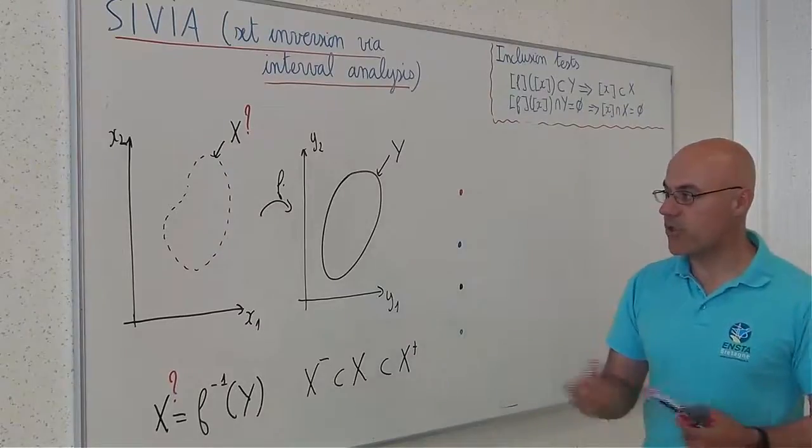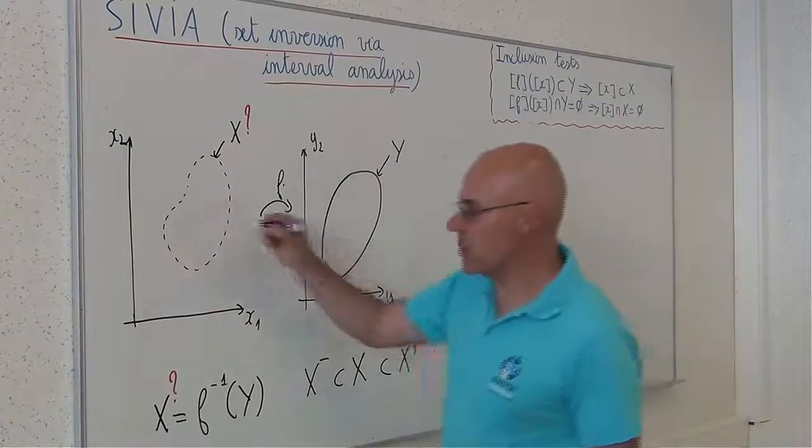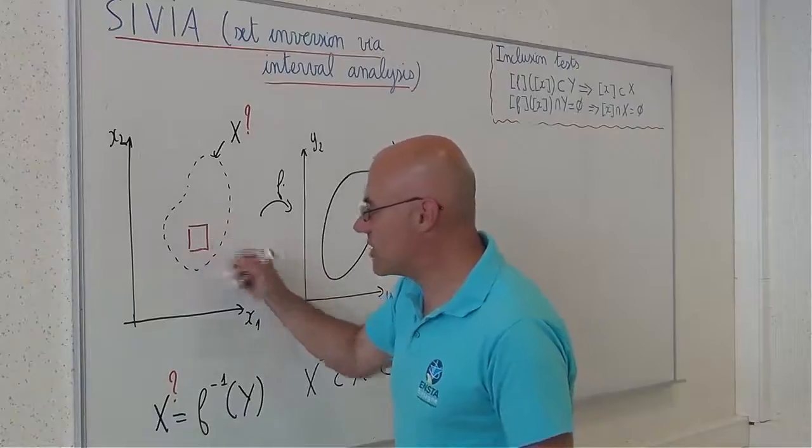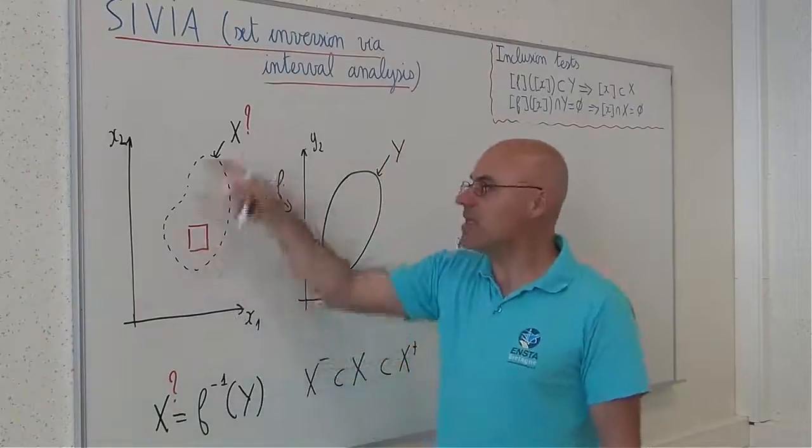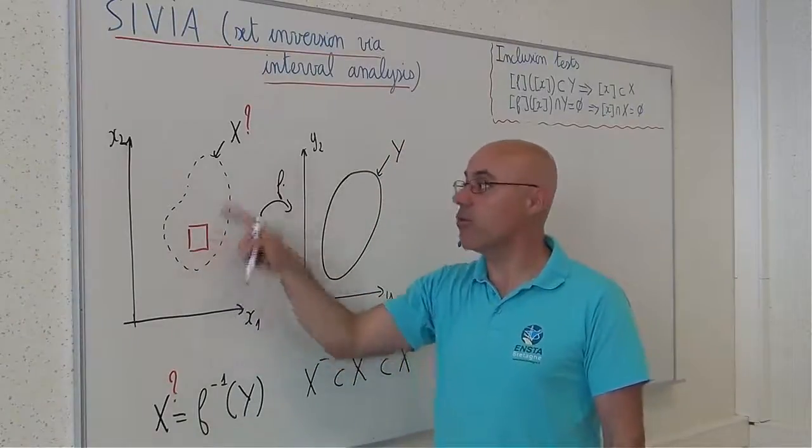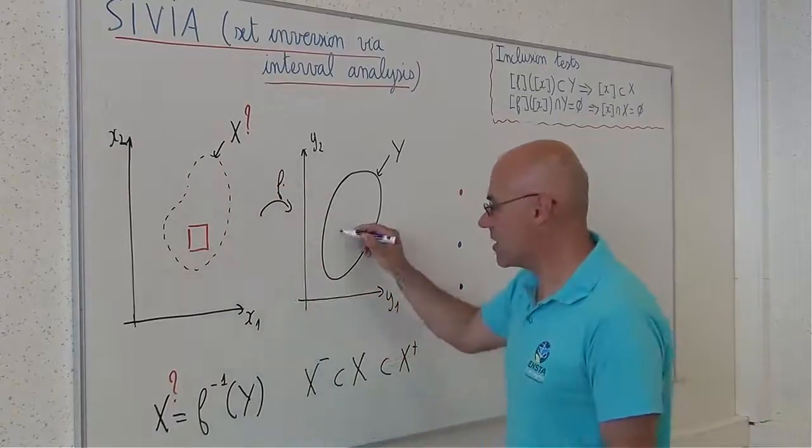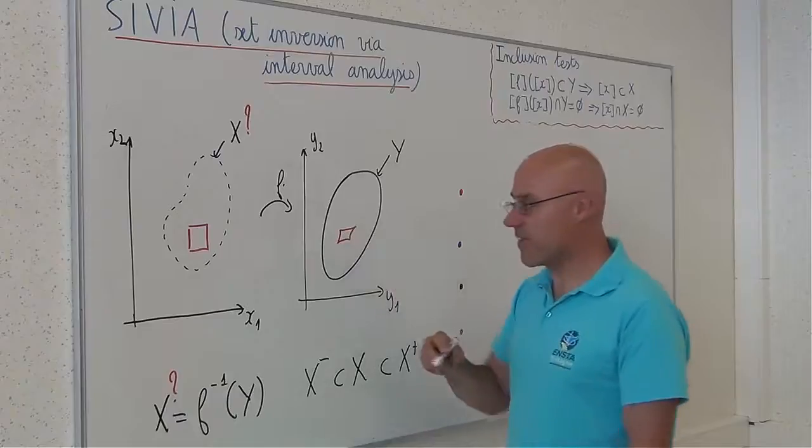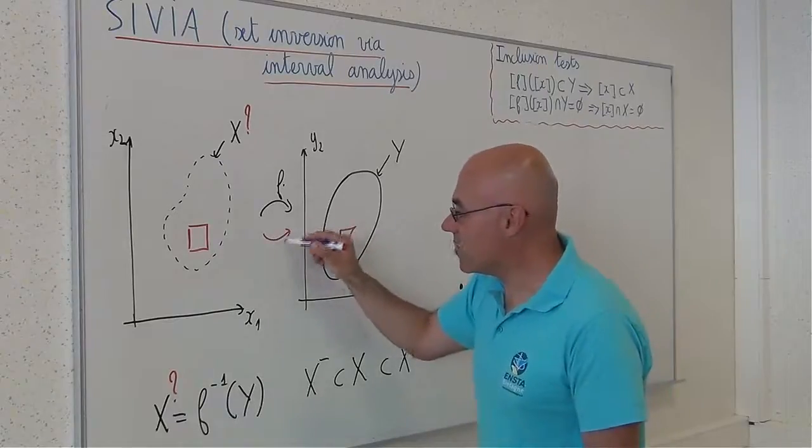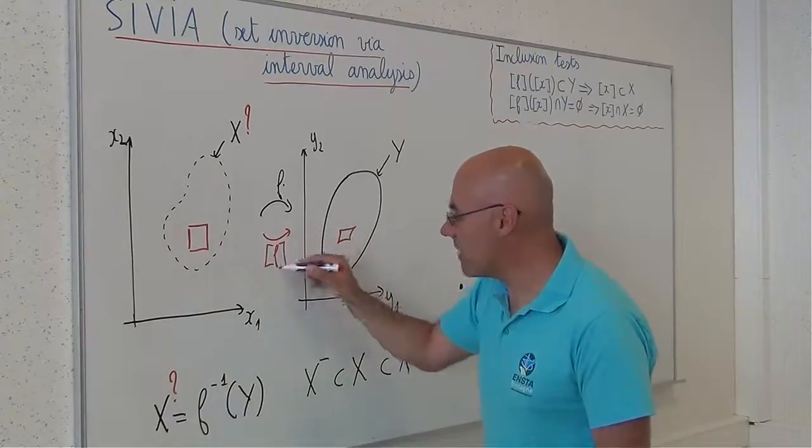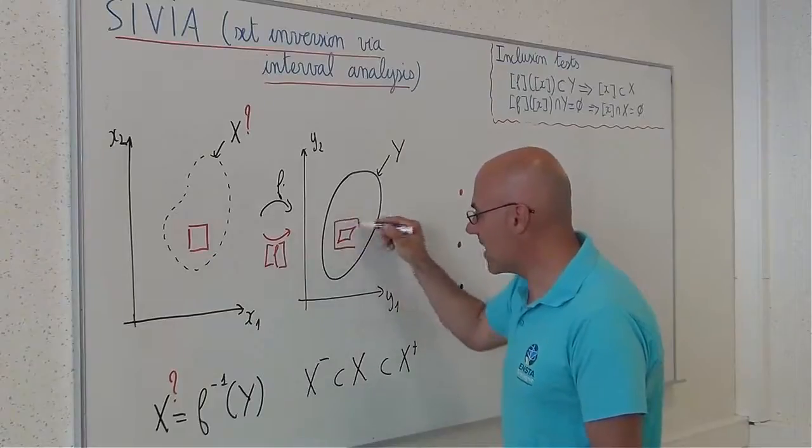I will consider different situations. The first situation is, let me consider one box inside the solution set. Of course, I don't know yet it is inside. The image of this box is something like this. And by the inclusion function f, I will obtain a box like this.